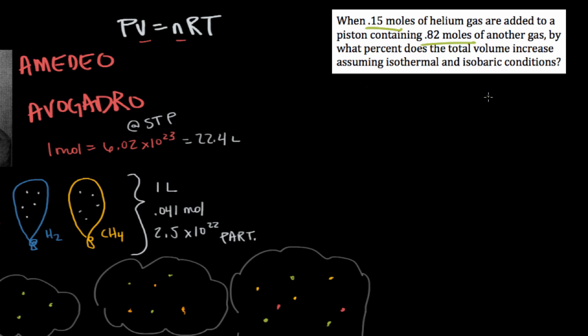Isothermal is the same temperature and isobaric is same pressure. So we have same temperature, same pressure, and we're looking for the percent of volume increase related to the molar increase. This is a perfect opportunity to use Avogadro's law. Let's start with V1 divided by N1 is equal to V2 divided by N2, because Avogadro's law says that the quotient of the volume and the number of moles is constant for an ideal gas.